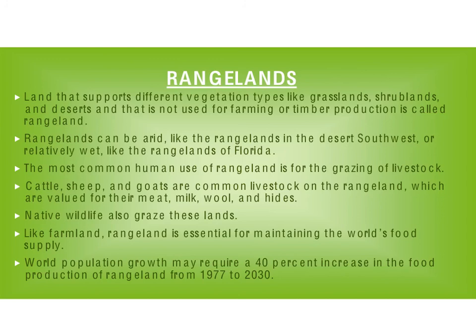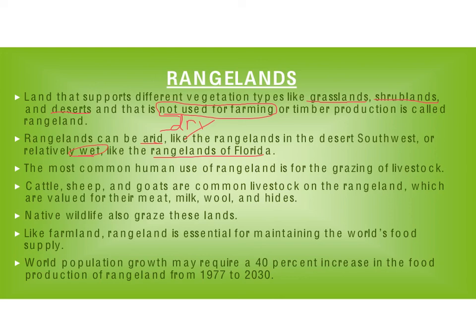That takes us to rangelands. Rangelands kind of go hand in hand with farmlands, except rangelands support grasses and shrubs and even some deserts that are not used for farming but are used for ranging. The big thing here is they are not used for farming — if they were, they'd be lumped into cropland. Rangelands vary in humidity. They can be really dry, like the rangelands and deserts of the southwest — arid is a fancy word for dry — or they can be fairly wet, like a lot of the rangelands of Florida.